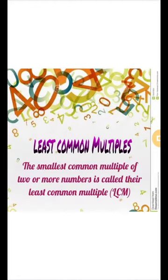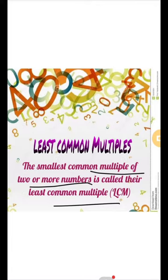What is Least Common Multiple? The smallest common multiple of two or more numbers is called their Least Common Multiple. In the last video, we discussed how to calculate and write the multiples of a given number.